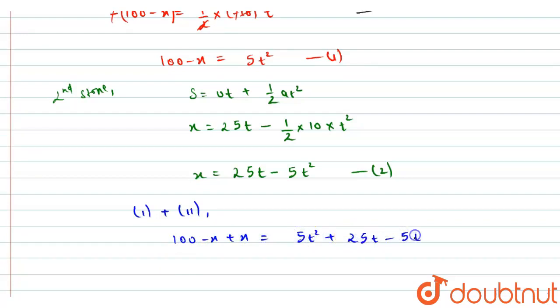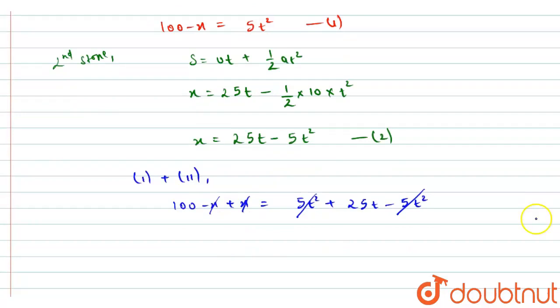So from here 5 t square and x will cancel out and we will get 25 t equals to 100, so from here we will get t equals to 4 seconds. That means after 4 seconds the two stones will cross each other, this is the first part of the question.